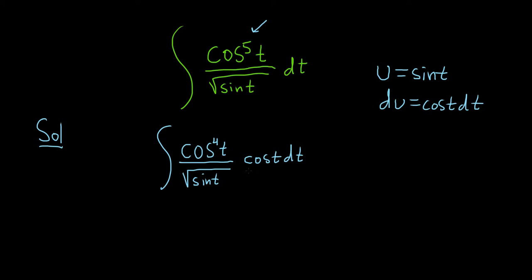Alright, so we saved a copy of cosine. And so you see our du is going to be right here, du is cosine t dt. So the only thing left to deal with is this cosine to the fourth power. So because u is equal to sine, we need to rewrite that in a nice way.